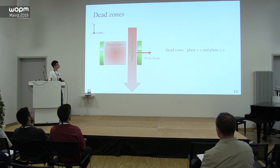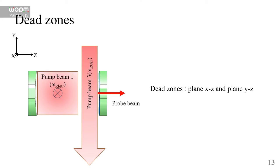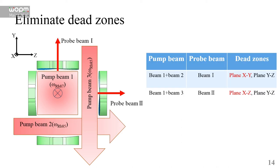When we rotate this device around the X-axis for 90 degrees, the dead zones change to be plane XZ and plane YZ. Let's think about what will happen when we combine the two configurations in one atom cell. We can see that with different groups of pump beam and probe beam, the plane XY and plane XZ will be no longer dead zones.